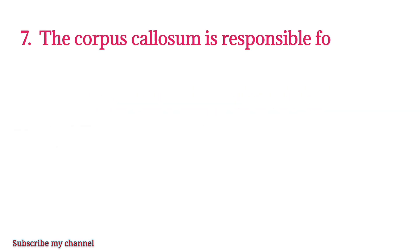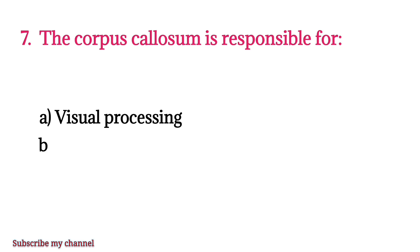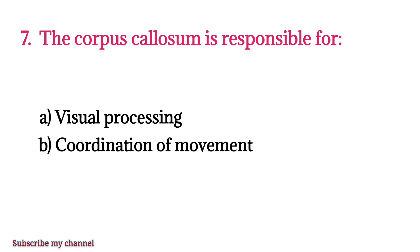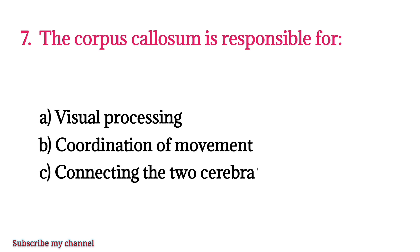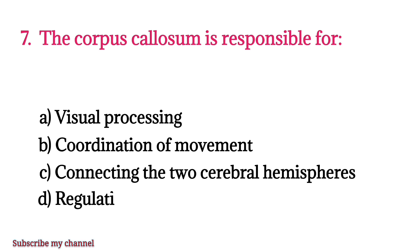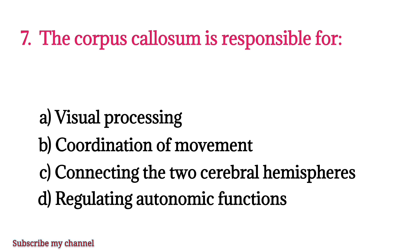MCQ number seven: The corpus callosum is responsible for — option A: visual processing, option B: coordination of movement, option C: connecting the two cerebral hemispheres, option D: regulating autonomic functions. The right option is option C.